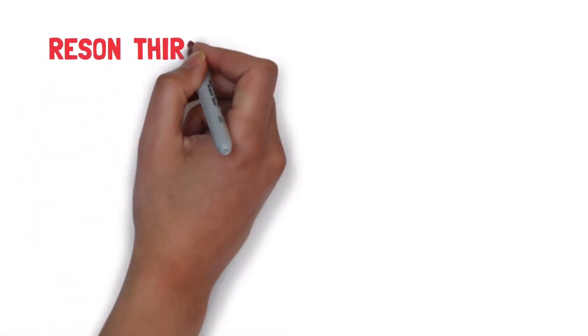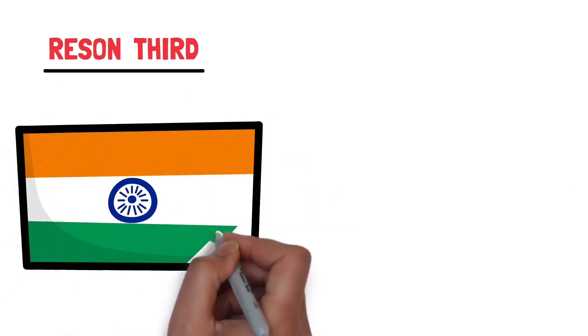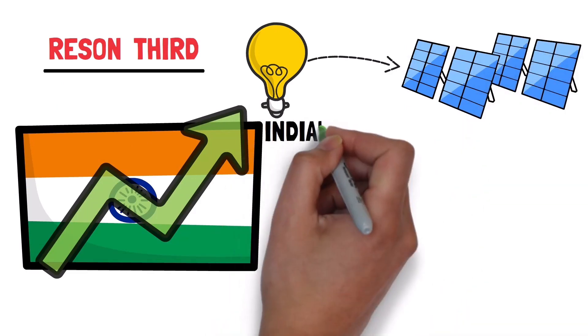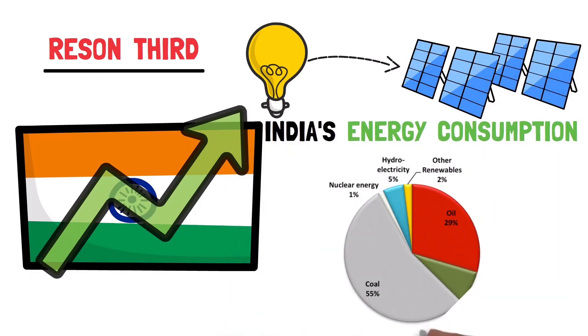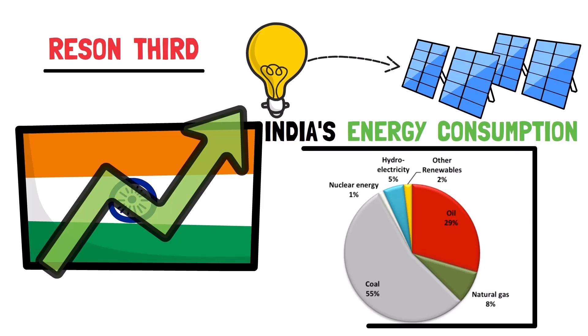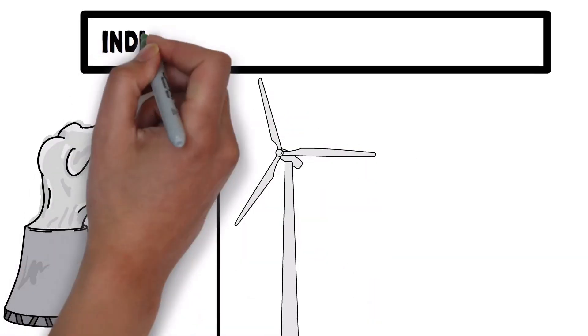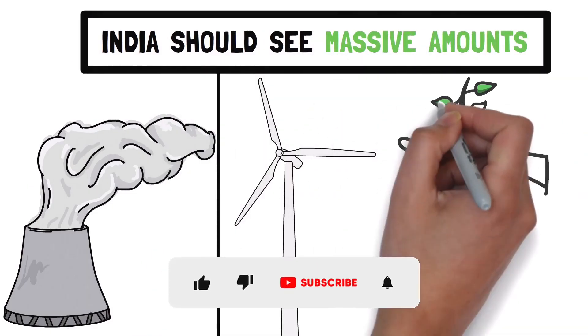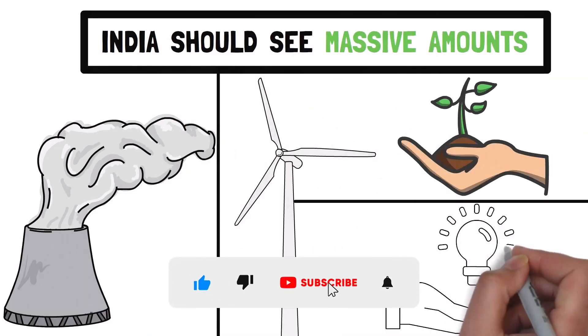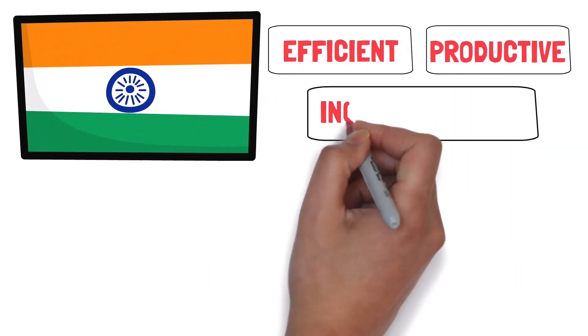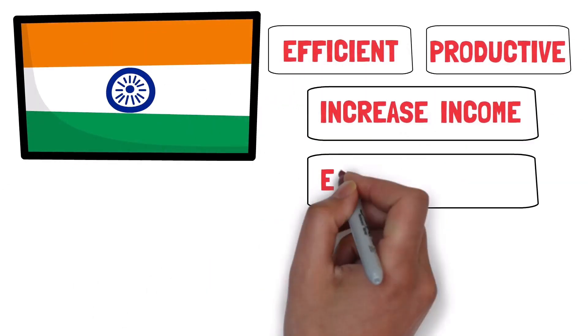Now, the third biggest reason why India is set to crush this next decade is because of the energy transformation. It's estimated that at least two-thirds of India's energy consumption will come from renewable energy sources as the world transitions from fossil fuels to renewables. India should see massive amounts of investment opportunities and innovations in this field, which will help them become much more efficient, productive, and of course increase their income and overall economic output.